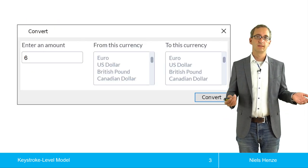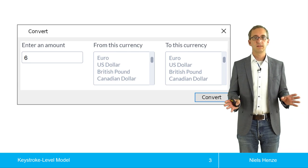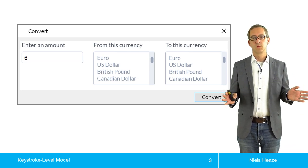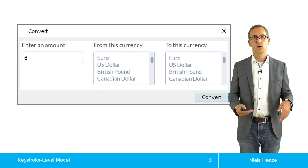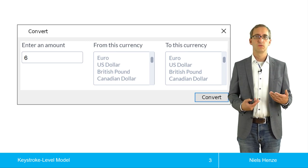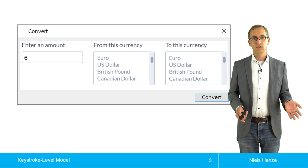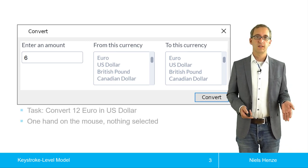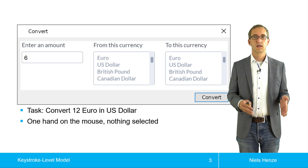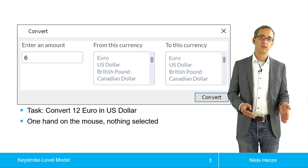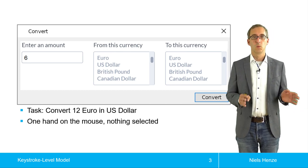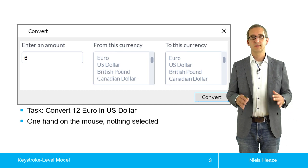Let's look at an example. This is a basic form and we would like to know how long people need to interact with this form. The form alone is not sufficient - we need a task. The task is convert 12 euros to US dollar. One hand is on the mouse and nothing is selected.